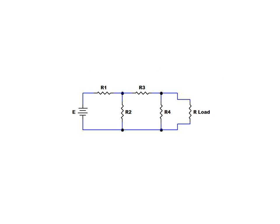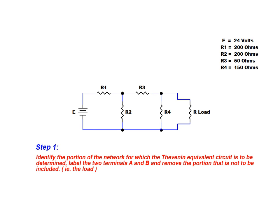For the purposes of this example, we have selected a simple network containing a single voltage source in order to demonstrate the procedure. We have assigned sample values to the voltage source and resistors in our network, and we will begin our conversion with step 1 of the process.